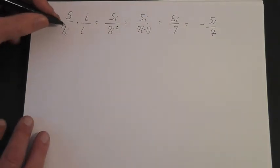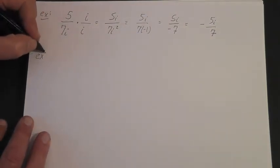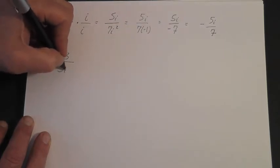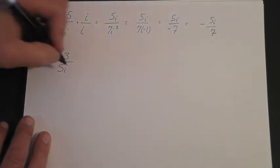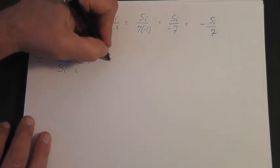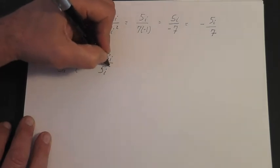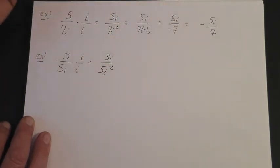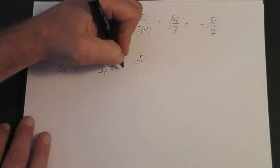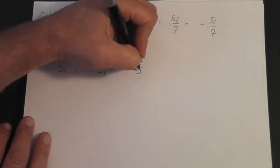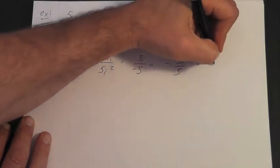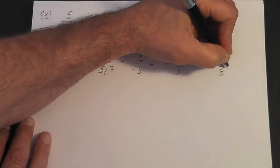Anytime you have an i alone on the bottom — for example, 3 over 5i — it's going to be a very similar problem. Multiply by i over i: you get 3i over 5i squared. Again, i squared is minus 1, so that's 3i over 5 times minus 1, which is negative 5. So that's minus 3i over 5, or sometimes written minus 3/5 i.